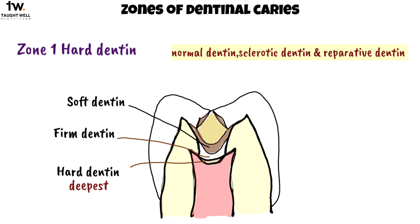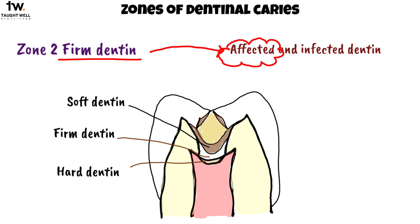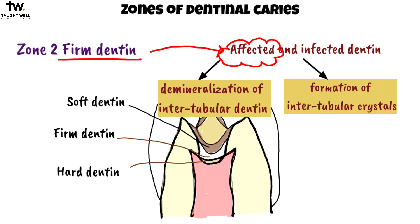The second zone is firm dentin, previously called affected dentin or inner caries dentin. Its main feature is demineralization of intertubular dentin and the formation of intertubular crystals at the advancing front of the lesion. Clinically, firm dentin is not easily excavated by hand and pressure needs to be applied to remove it. It has a potential for remineralization and can have a leathery texture.